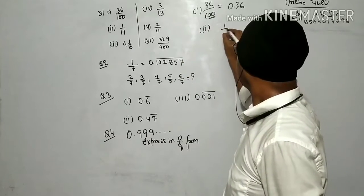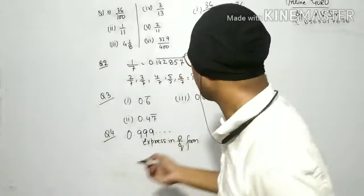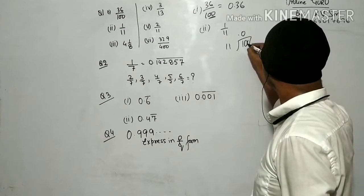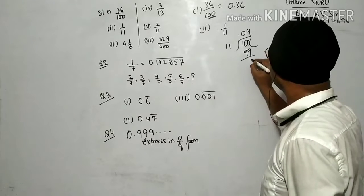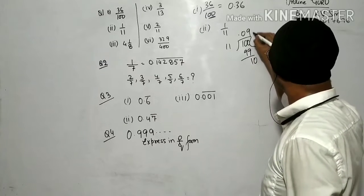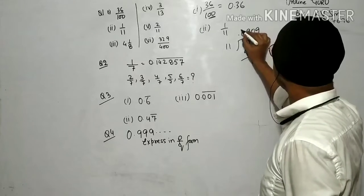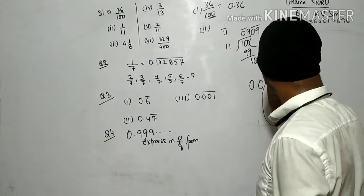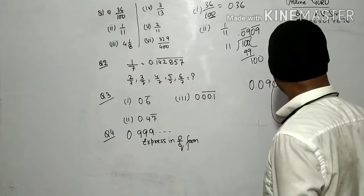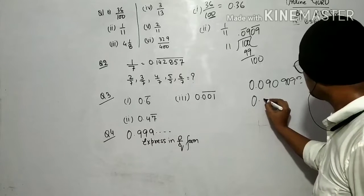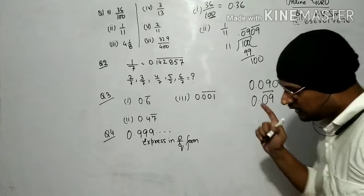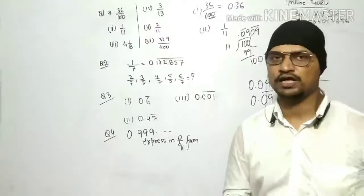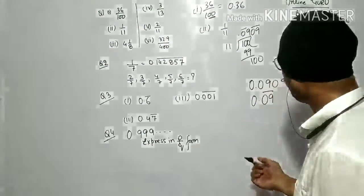Now we solve 1 upon 11. We divide: 1 goes in, then 11 goes, giving us decimals 0.0909... We get the decimal — it's 0.09, 09, 09 and so on. This goes on and on. So it is non-terminating also, and it is recurring — 09 repeats.